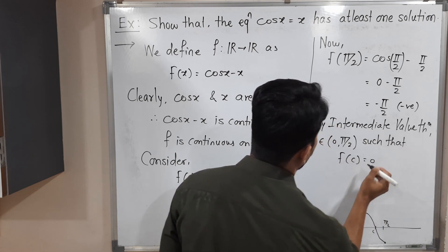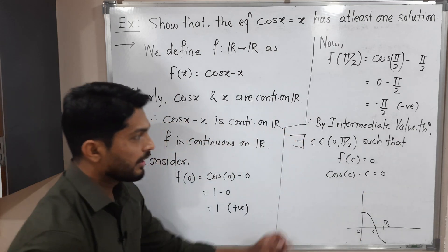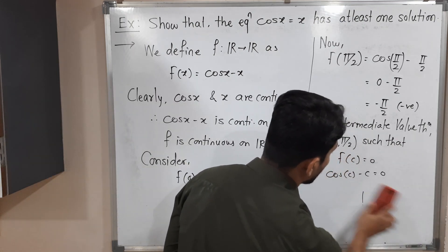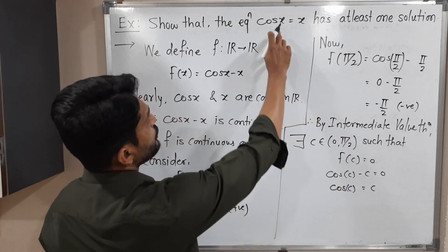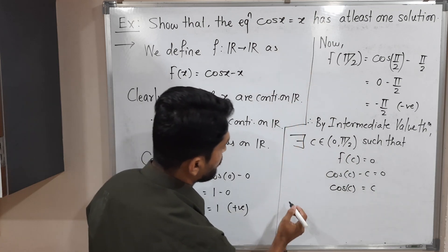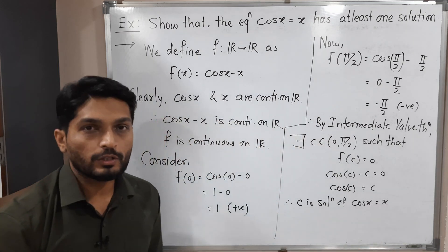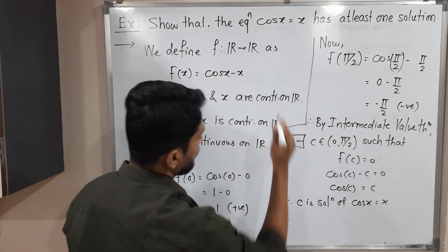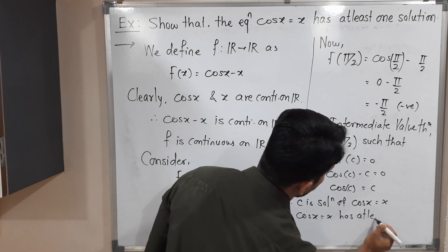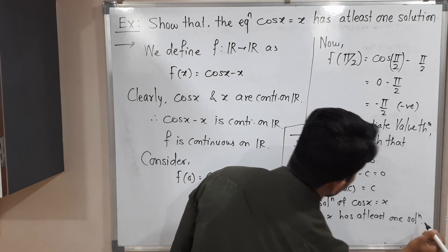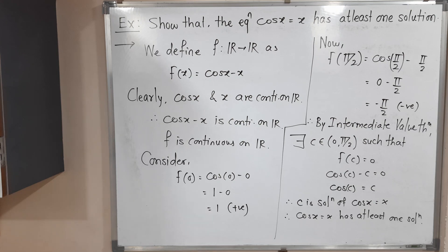f(c) = 0 means putting x = c we get cos c − c = 0, and shifting c to the other side gives cos c = c. That means c is a solution of cos x = x. So cos x = x has at least one solution — many solutions can be possible, but we have proven at least one, which is the important part. The example is complete.